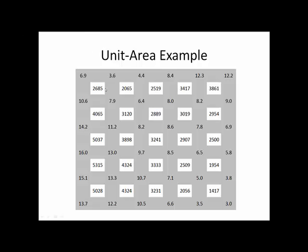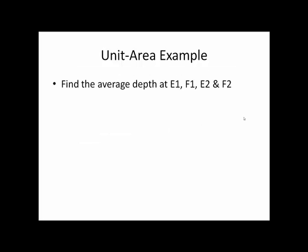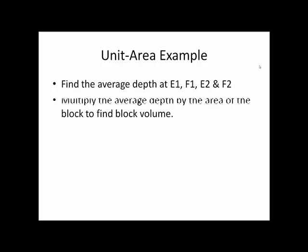So, I will take the average of 6.9 and 3.6 and 7.9 and 10.6 to get an average depth. I will multiply that average depth by the 100 foot by 100 foot area that those points form the corners of. And then get a volume. And then that volume in cubic yards turns out to be 2,685 cubic yards. And I have done that for all of the squares in my grid. So, once again, recapping, I will find the average depth for the corners of the square I am trying to compute the volume for. Then I am going to multiply that average depth by the area of the block to find that block volume.